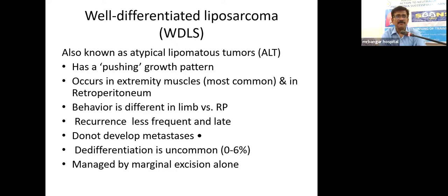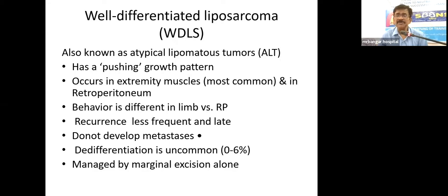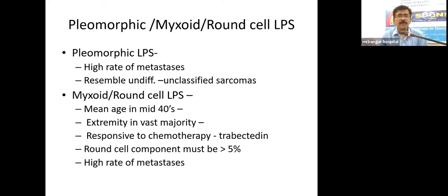Well-differentiated liposarcoma, also known as atypical lipomatous tumor, has a pushing growth pattern. In the retroperitoneum, the tumor grows and compresses adjacent structures with less invasion, less frequent local recurrence, and usually late distant metastasis. However, with each recurrence these tumors can undergo dedifferentiation. They are managed only by marginal excision. Pleomorphic or myxoid/round cell liposarcomas have high rates of metastasis.